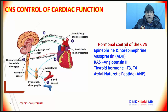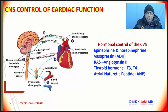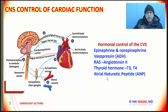Now let us look at the hormonal control of the cardiovascular system. Through the sympathetic system, we have the release of epinephrine or adrenaline and norepinephrine or noradrenaline. We have vasopressin, which acts through the anti-diuretic hormone. We have the renin-angiotensin system, which produces angiotensin 1 and 2. As you know, angiotensin 2 is one of the most potent vasoconstrictors. We also have thyroid hormones, namely T3 and T4, which increase heart rate and blood pressure. Then we have the atrial natriuretic peptide, which has an effect based on the venous return to the right side of the heart.